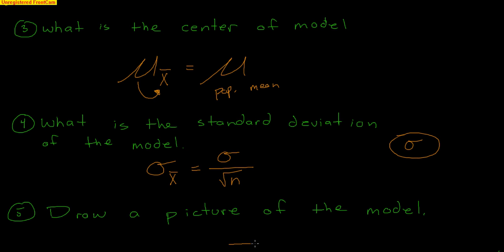Next, you would draw a model. We put the mean of our sampling distribution right in the middle, then go up 1, 2, 3 and down 1, 2, 3 standard deviations. That's pretty much it for our five steps. The only major change is the 'big enough' condition, and of course the formulas change a bit because we're talking about means.